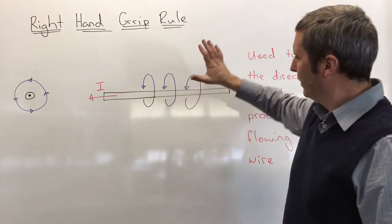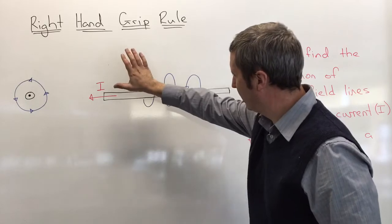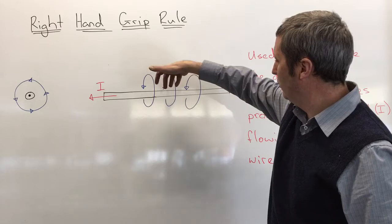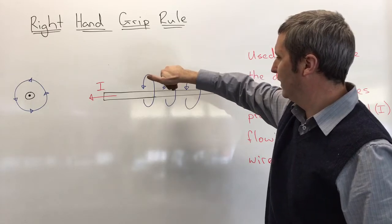This is called the right hand grip rule because as I put my thumb along the direction of the current here, my fingers grip round and they show the direction of the magnetic field lines.